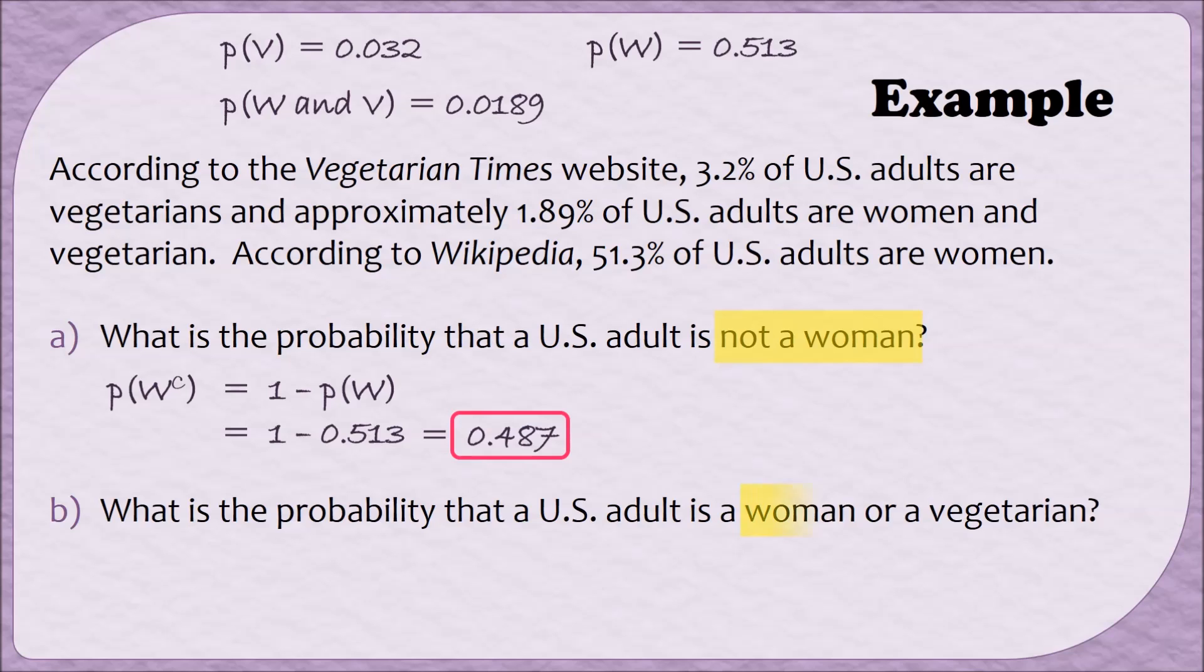What is the probability that a U.S. adult is a woman or a vegetarian? In this case, we've been asked to find a compound probability, the probability of W or V. Remember that our formula for an OR is the same as the probability of the first plus the probability of the second minus the probability of the AND. In other words, the probability of W plus the probability of V minus the probability of W AND V. I want to point out that when we say the probability of W AND V, that doesn't mean the probability of W along with the probability of V. You want to think of W AND V as its own kind of event that's separate from W or just V.